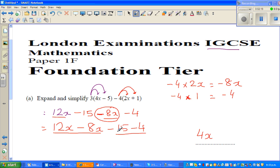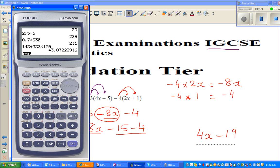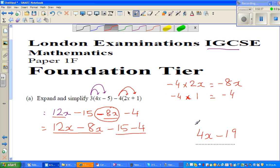If you're not sure, you can use a calculator. Minus 15 minus 4 is minus 19. So my answer is 4x minus 19.